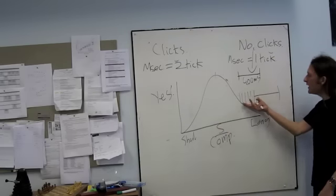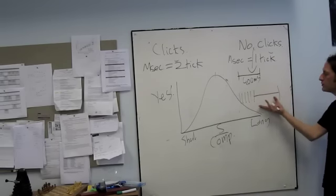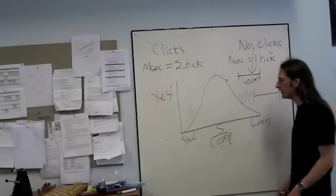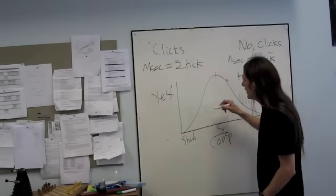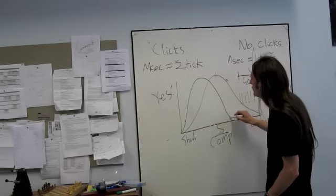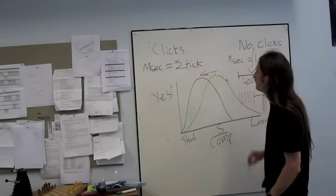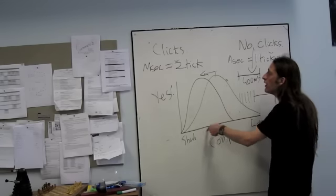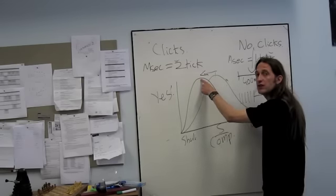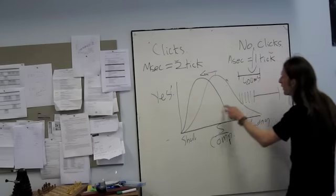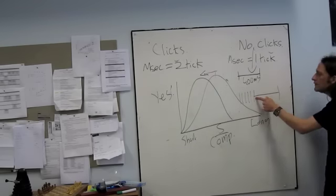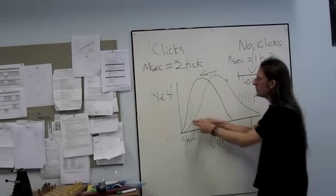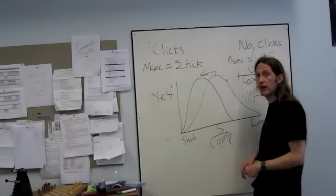So they're comparing their elongated perception of the comparisons with their normal perception of the standard. And what happens in this condition is the function gets shifted in this direction. Basically, the comparison doesn't need to be as long for them to say that it's equal to the standard, because you have made the subjective duration of the comparison longer. So it doesn't need to be as long before they start saying yes.